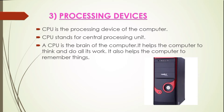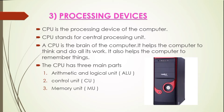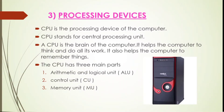It also helps the computer to remember things. A CPU has three main parts: the first part is the Arithmetic and Logical Unit, or ALU; the second is the Control Unit, or CU; and the third is the Memory Unit, or MU.